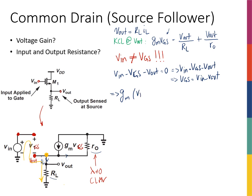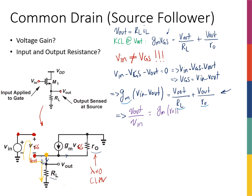Therefore, GM times (VIN minus Vout) equals Vout over RL plus Vout over R0. If I massage this expression, I can relate VIN and Vout using known parameters GM, RL, and R0. Solving gives the voltage gain: Vout over VIN equals GM·(R0 ∥ RL) divided by (1 + GM·(R0 ∥ RL)).